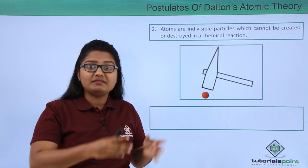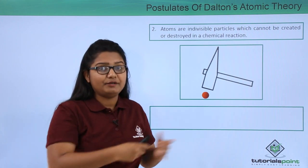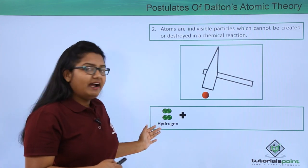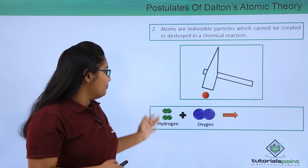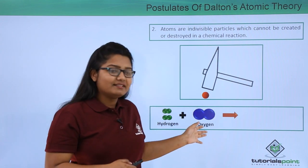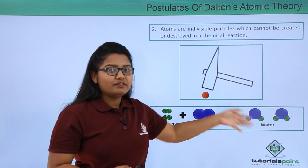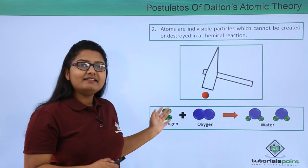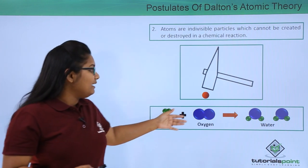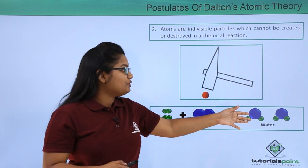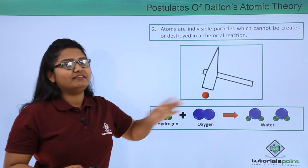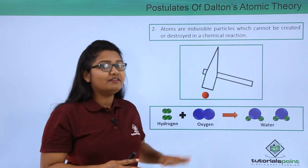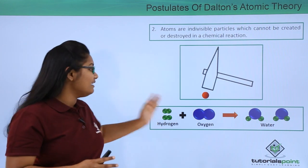For example, two molecules of hydrogen combine with a molecule of oxygen to form two molecules of water. In this example we can clearly see that there is simply a rearrangement of hydrogen and oxygen atoms — there is no formation of a new atom or destruction of the already existing atoms.